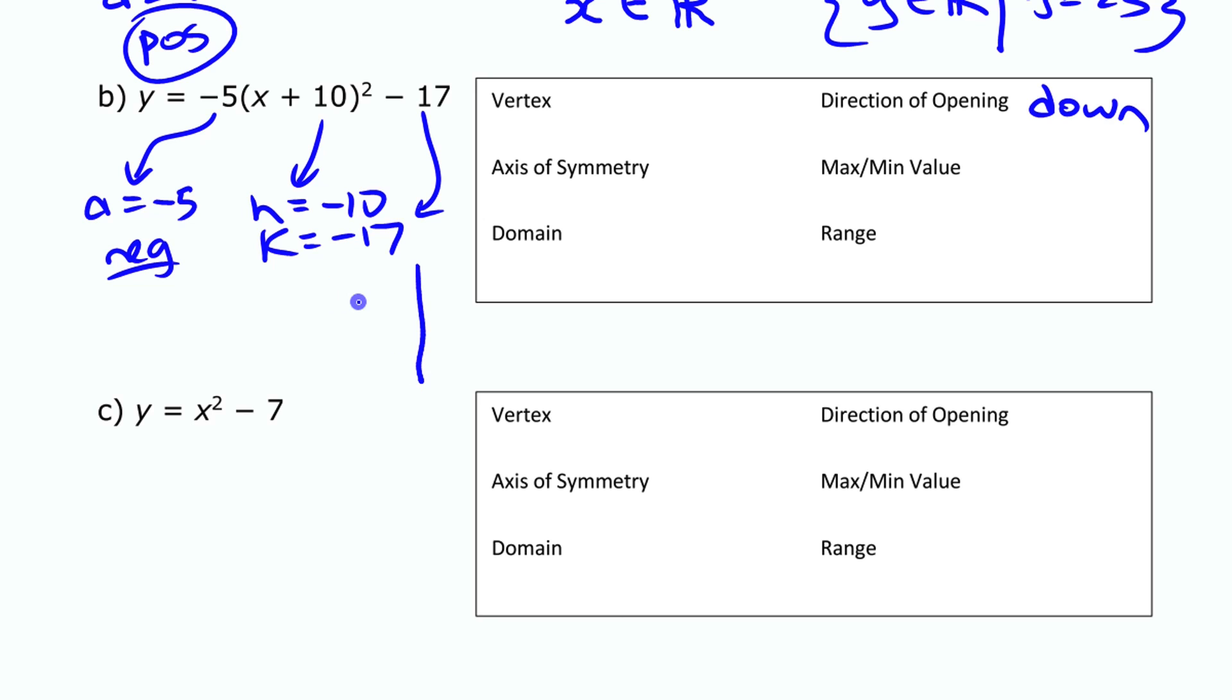And our k value here is negative 17. So if we're trying to visualize the graph there, you have that the entire graph has been shifted to the left 10 and down 17. So that's where that vertex is, negative 10, negative 17. And then if it opens down, we have like this, we have our axis of symmetry that is going to pass right through that x coordinate of the vertex there, right? Because it's right there, it's always going to be that x coordinate of the vertex, x equals negative 10. This one, since you have the thing opening down, it's going to have a maximum value of negative 17. It has a maximum of negative 17.